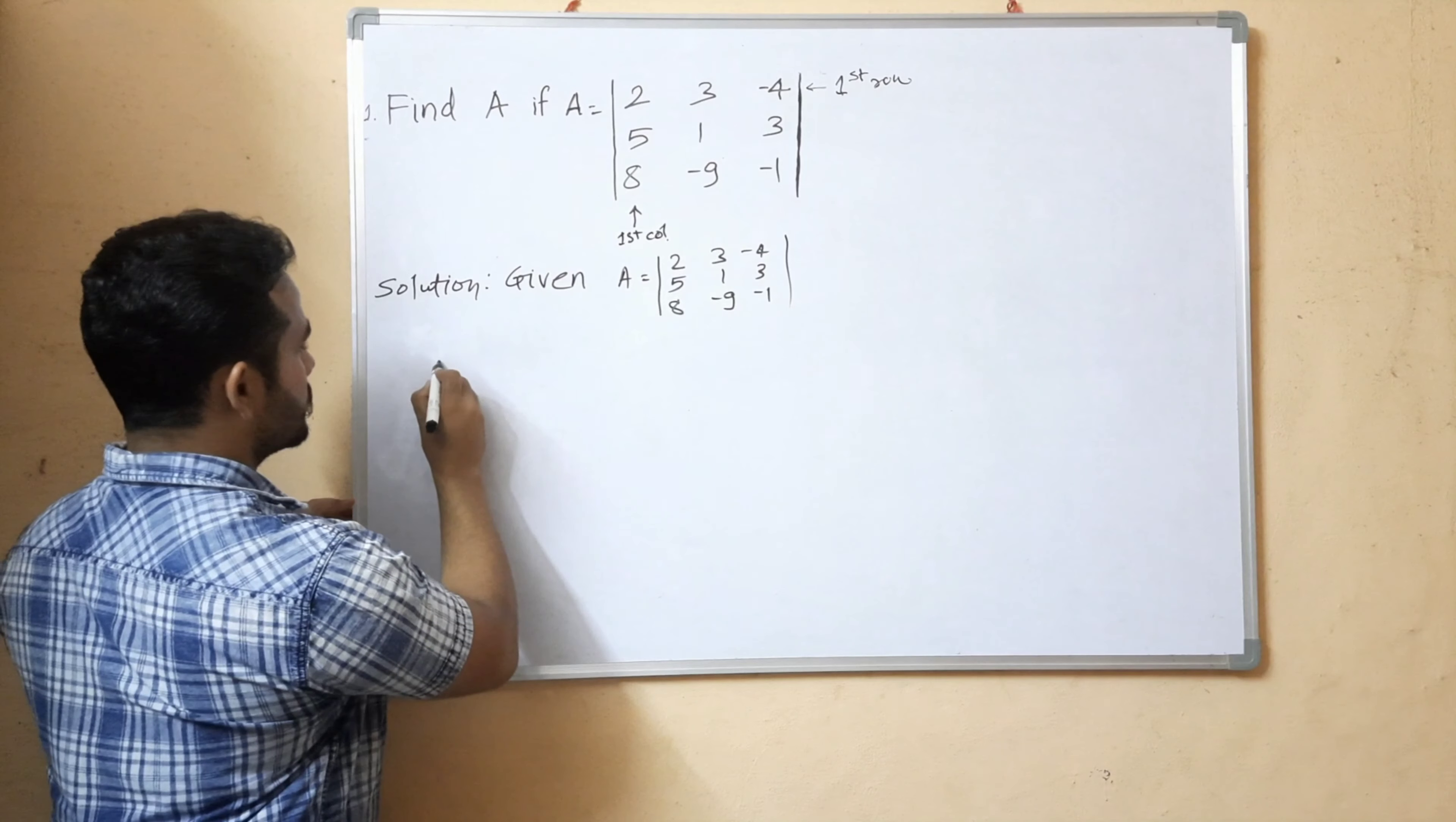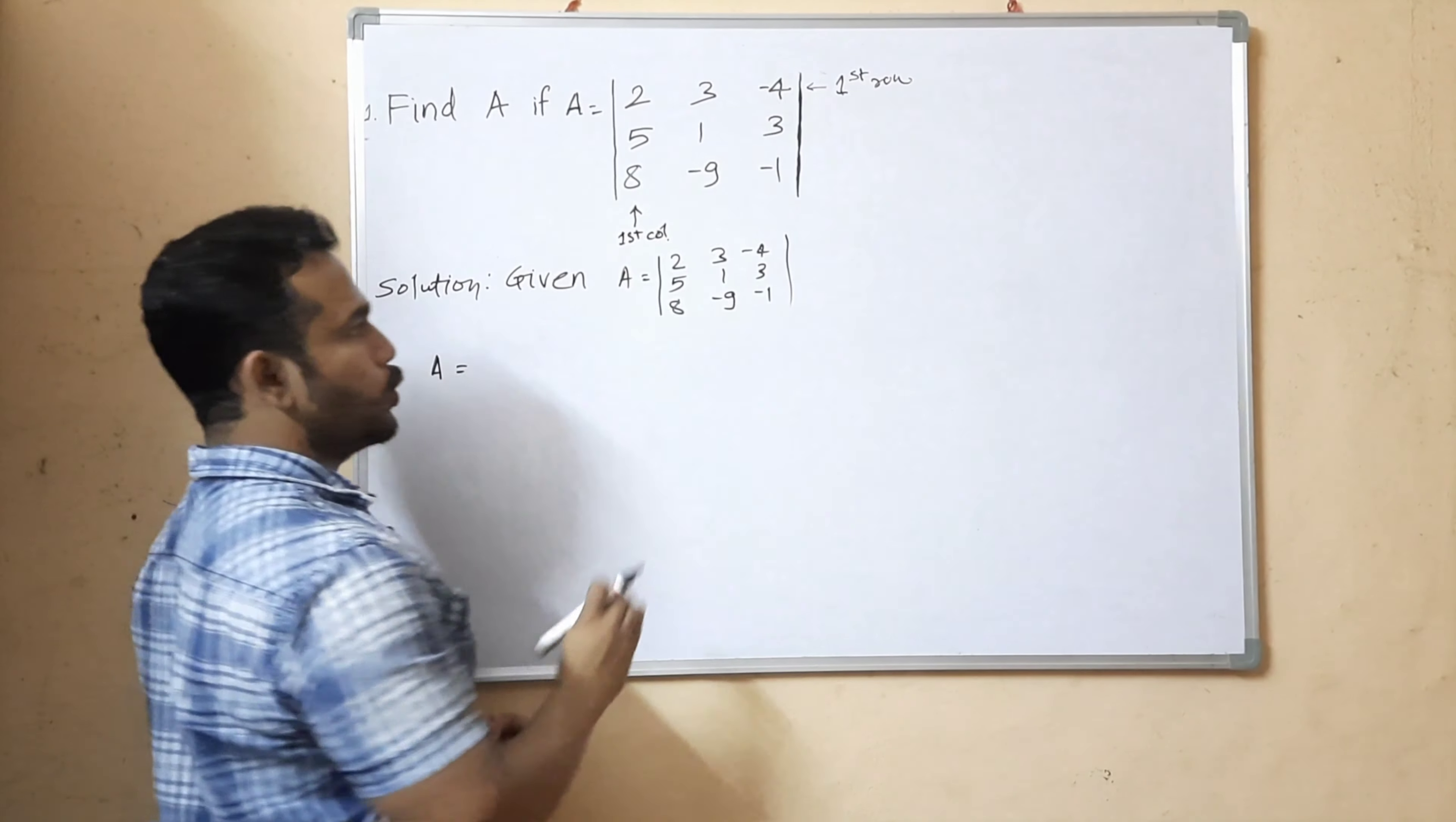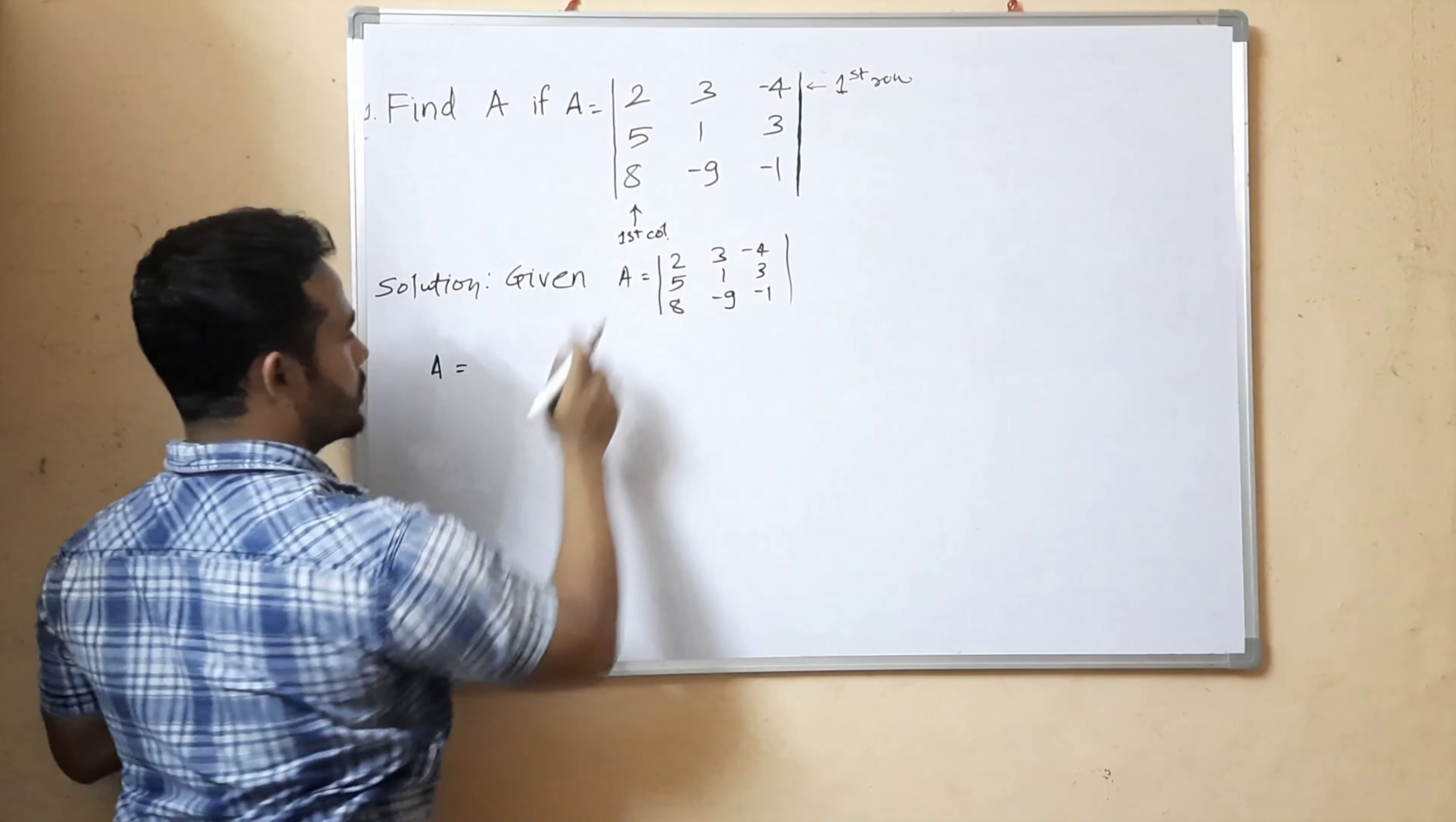The final A is equal to: we take the first row's first element, which is 2. When we select an element, we ignore that row and column, then solve the remaining determinant. We multiply the selected element by this determinant.